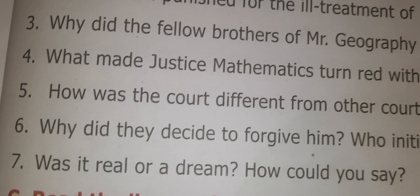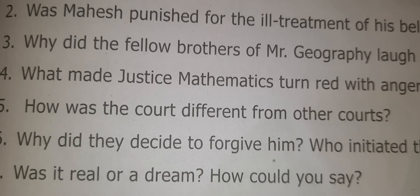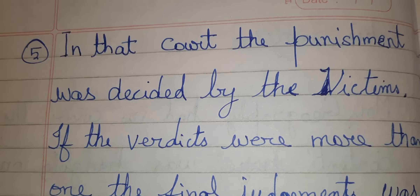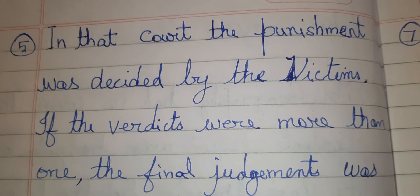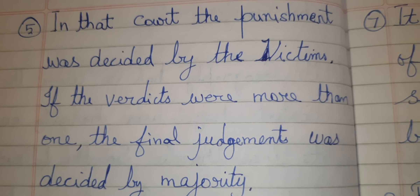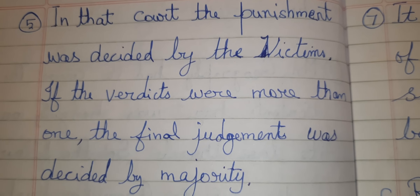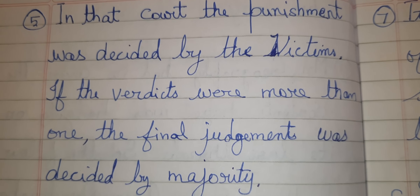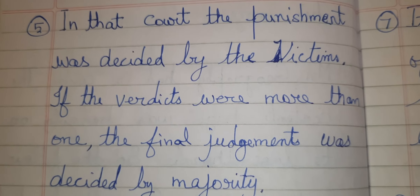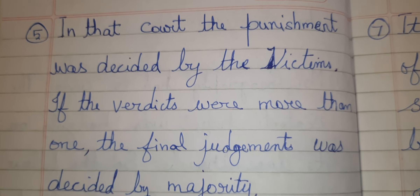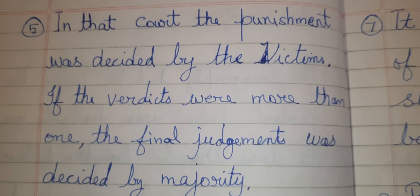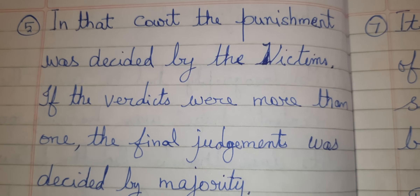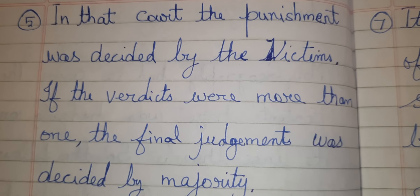Fifth question: How was the court different from other courts? In that court, the punishment was decided by the victims. If the verdicts were more than one, the final judgment was decided by the majority.